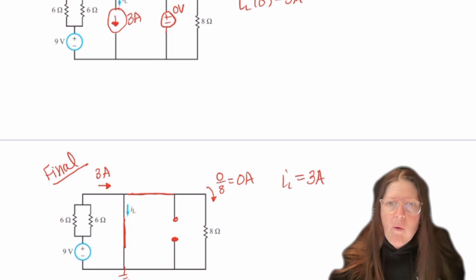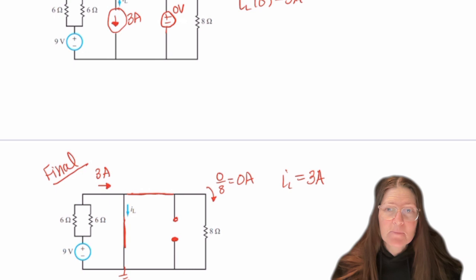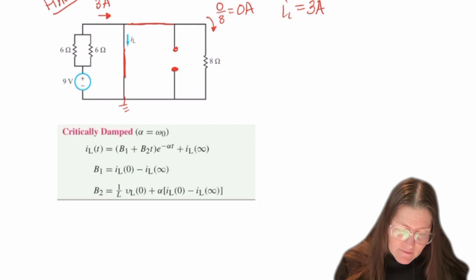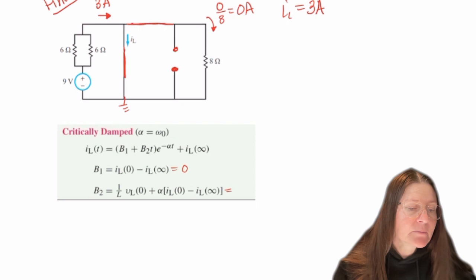So because IL of zero and IL of infinity is the same, that means that they're going to be zero for B1. And it will also be zero for B2, because this is zero.